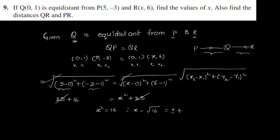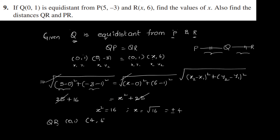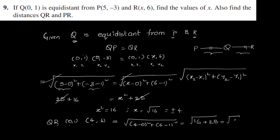Now we need to find the distance QR and PR. QR means between Q(0,1) and R(x,6). Since x equals plus or minus 4, R is (plus or minus 4, 6). Using the distance formula, it becomes root of (x2 minus x1) squared plus (y2 minus y1) squared, which gives root of 16 plus 25, equal to root of 41. Similarly, we can find PR.